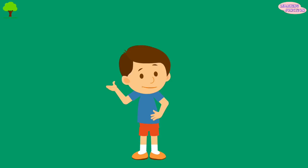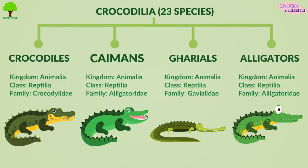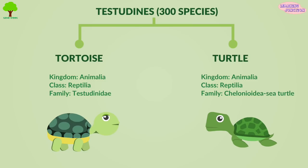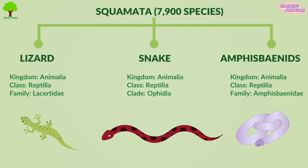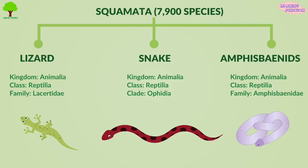Scientists classify reptiles into four major groups or orders: Crocodilia, with about 23 species including crocodiles, caimans, gharials, and alligators; Sphenodontia, with two species — the tuatara from New Zealand; Testudines, with about 300 species of tortoises and turtles; and Squamata, with about 7,900 species including lizards, snakes, and amphisbaenians. Now you know a lot about reptiles — thanks for watching!